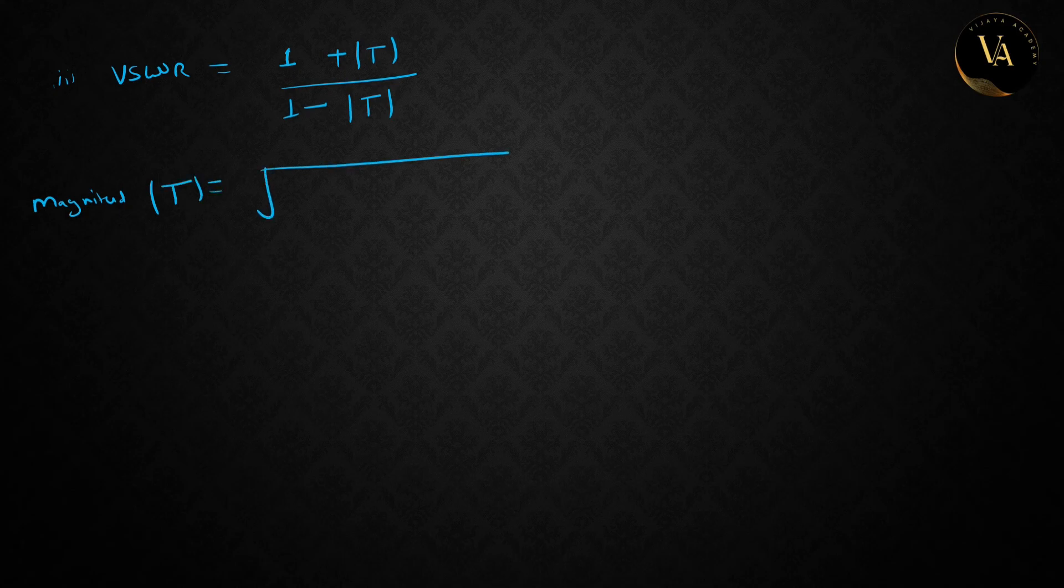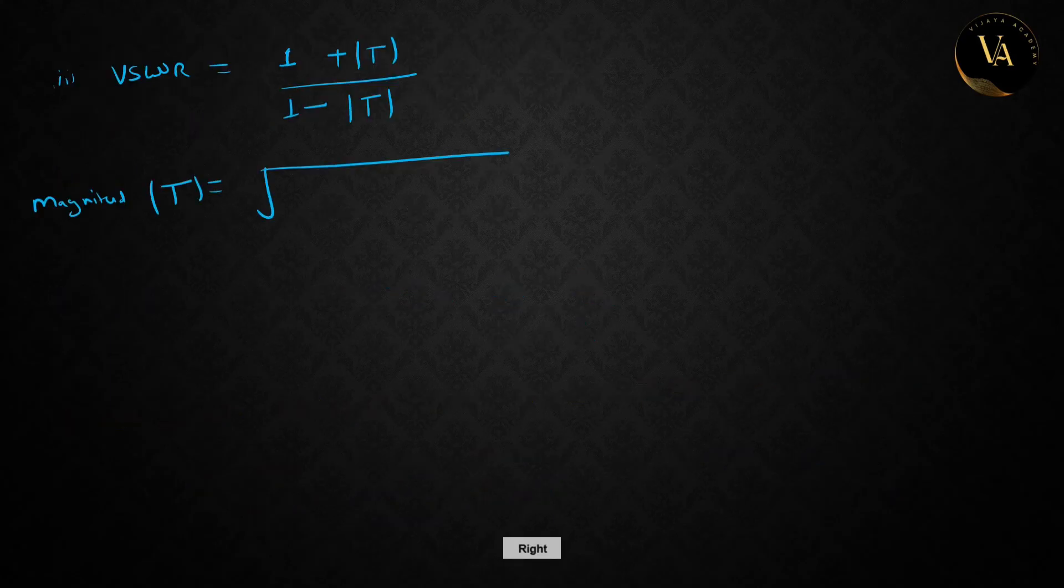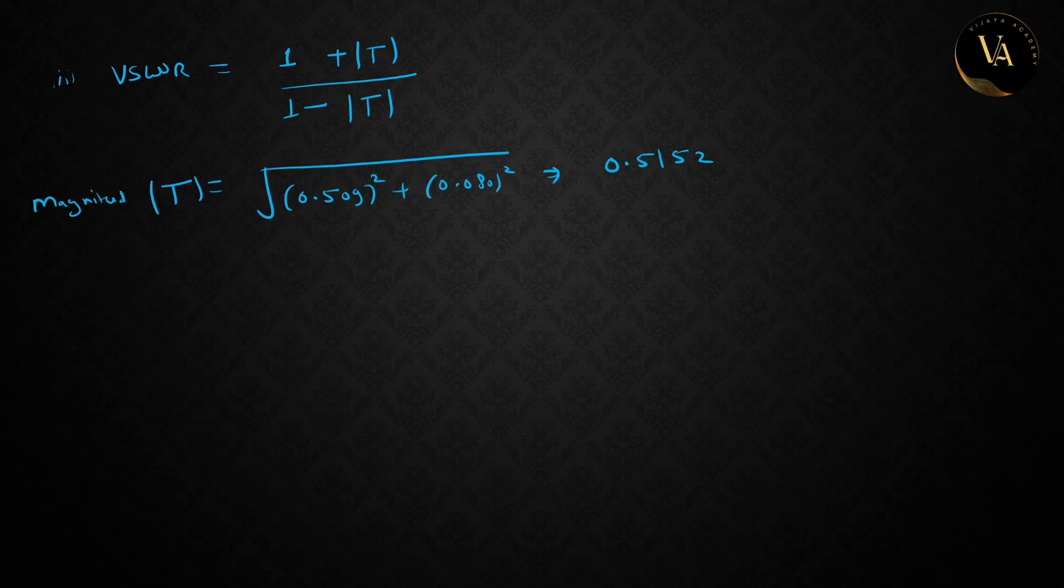Magnitude is under root of real part square plus imaginary part square. Real part is 0.059 squared plus imaginary part 0.080 squared. This gives us 0.5152.